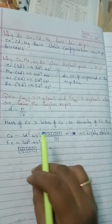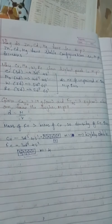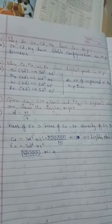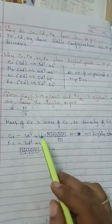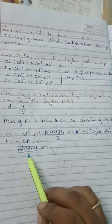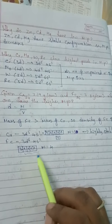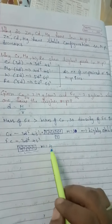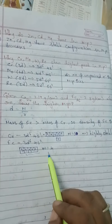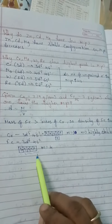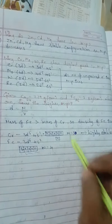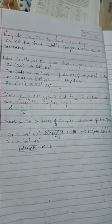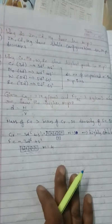Now in terms of unpaired electrons: chromium's electronic configuration is 3D5, 4S1 — it has only one unpaired electron in the s orbital. For iron: 3D6, 4S2 — with 6 electrons in 3D: 1, 2, 3, 4, 5, then 6 — iron has four unpaired electrons.